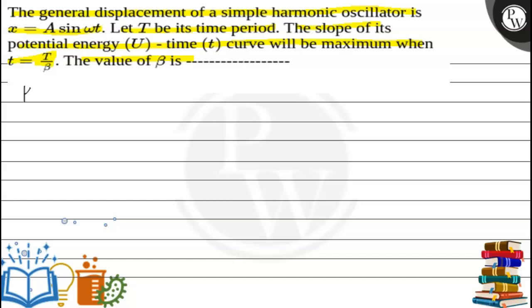Now the key concept. The equation for potential energy for the simple harmonic oscillator is given by 1/2 m ω² A² sin² ωt. This is the general equation for potential energy for simple harmonic oscillator.